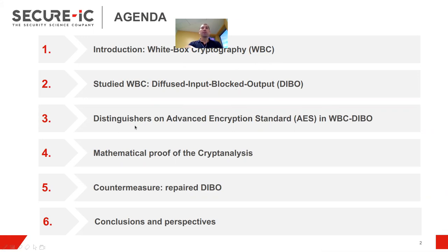Then I'll show that it can happen that this scheme is broken. So I'll talk about the distinguishers on the case of the Advanced Encryption Standard, the AES. What's new is that I will give a formal mathematical proof of the cryptanalysis, which allows me to explain why DIBO can sometimes be broken. And actually I will derive from the proof a way to repair DIBO.